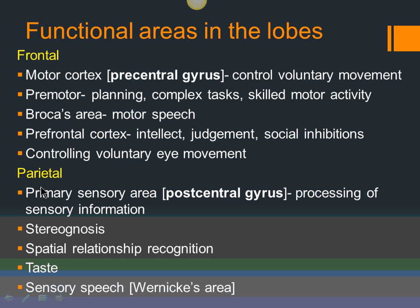The parietal lobe contains the post-central gyrus behind the central sulcus, where sensory information is processed — this is the primary sensory area. The parietal lobe is also important for stereognosis: the ability to identify an object placed in your hand with your eyes closed, just by feel of texture and shape. People with parietal lobe problems cannot do this without looking.